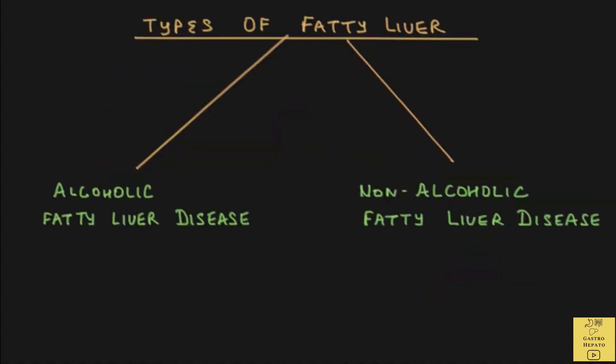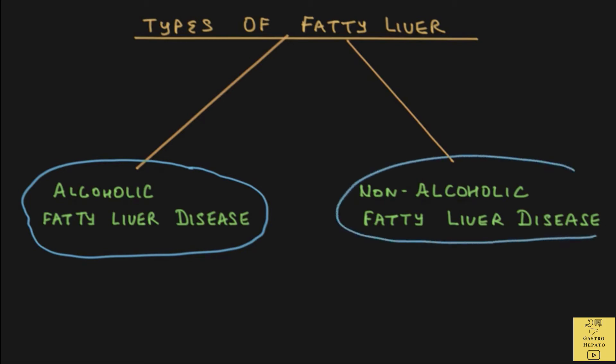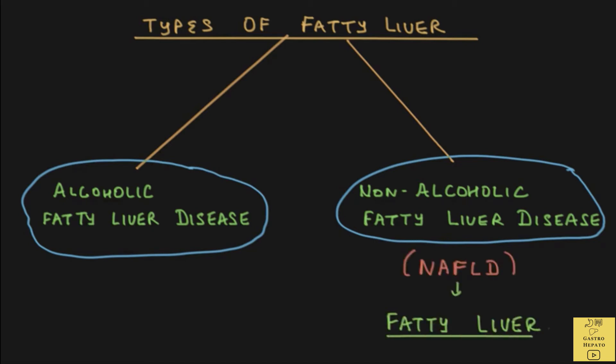Fatty liver is divided into two types. One is alcoholic fatty liver, which is due to excessive consumption of alcohol. The second one is non-alcoholic fatty liver disease, which is fatty liver not caused by a significant consumption of alcohol. In this presentation, we will only discuss fatty liver that is not due to alcohol. Instead of using the term non-alcoholic fatty liver disease or NAFLD, I will be using the simpler term fatty liver.